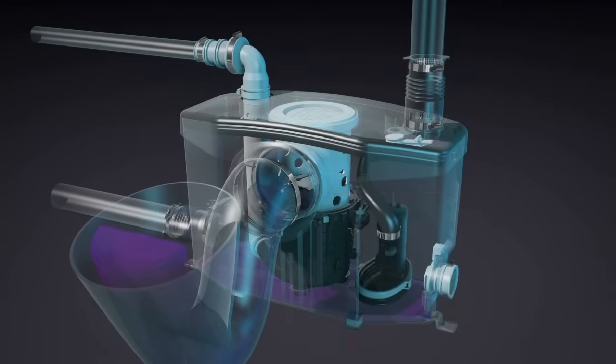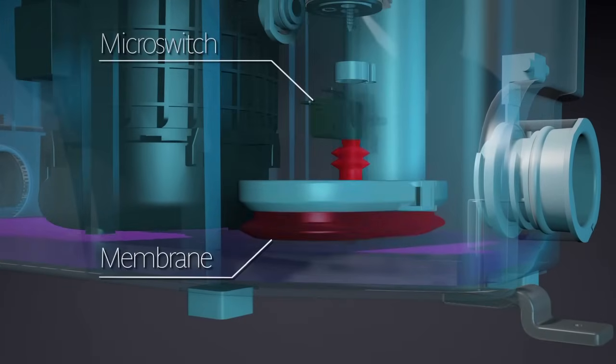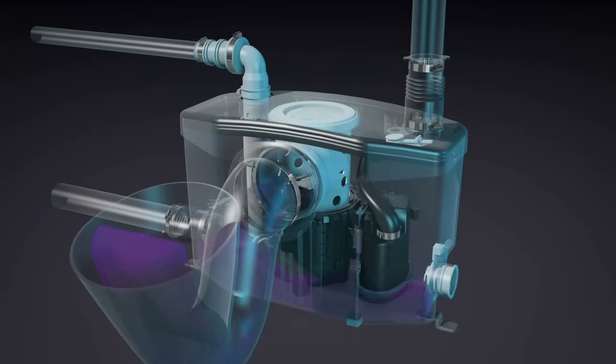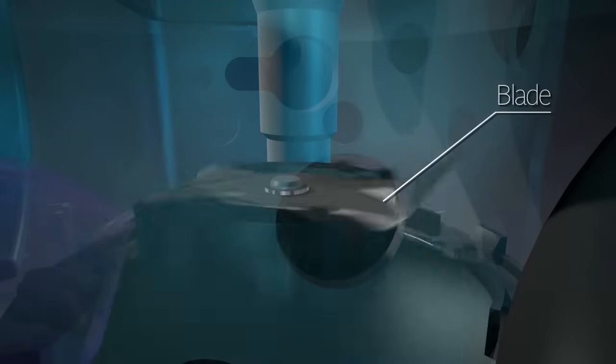Inside, the pressure sensing system consisting of a microswitch and a membrane detects pressure from the water level rising inside the unit. Once the water reaches the membrane, the pump turns on causing the blades driven by the motor to grind all the waste into tiny particles.